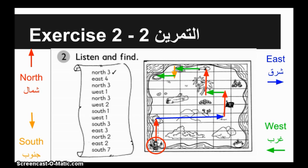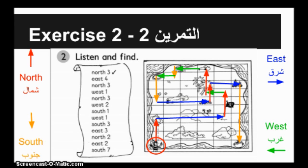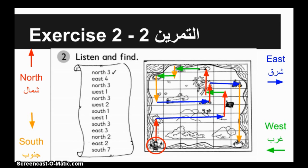South 1, 2, 3. East 1, 2, 3. North 1, 2. East 1, 2. South 1, 2, 3, 4, 5, 6, 7. West 1, 2, 3, 4, 5.